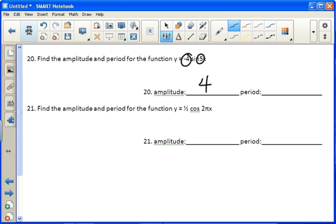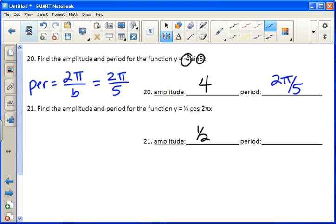Now for period, we have to do a little more work. For period, we have to do 2 pi over b. So in this case, we do 2 pi over 5. And that's just it. Period is 2 pi over 5. Now for the second one, we get 2 pi over 2 pi, which is 1. So the period will be 1. So the amplitude is the absolute value of the number out front. The period is going to be 2 pi divided by b, which is the number or the coefficient in front of x.